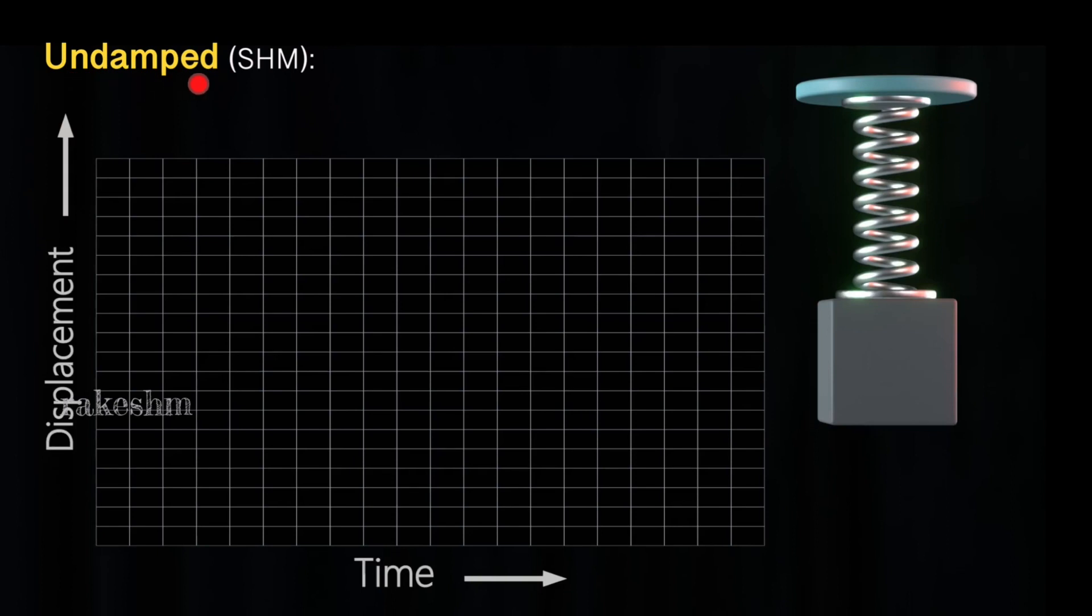The first is undamped oscillation. A special case of undamped oscillation is simple harmonic motion. Let us pull this block down slightly and observe simple harmonic motion.